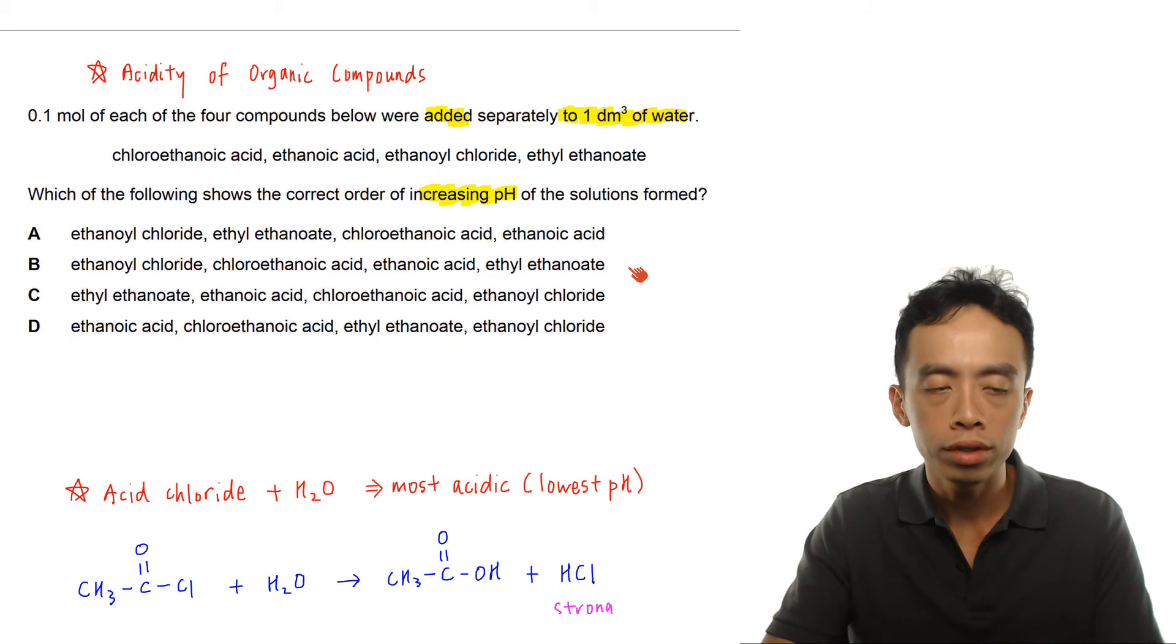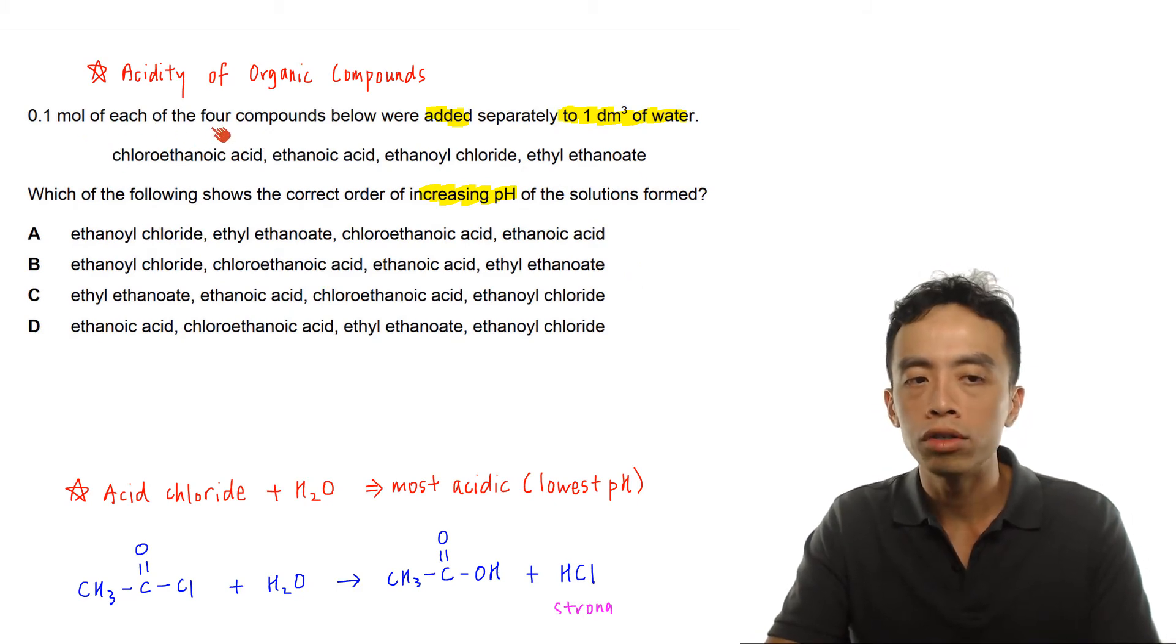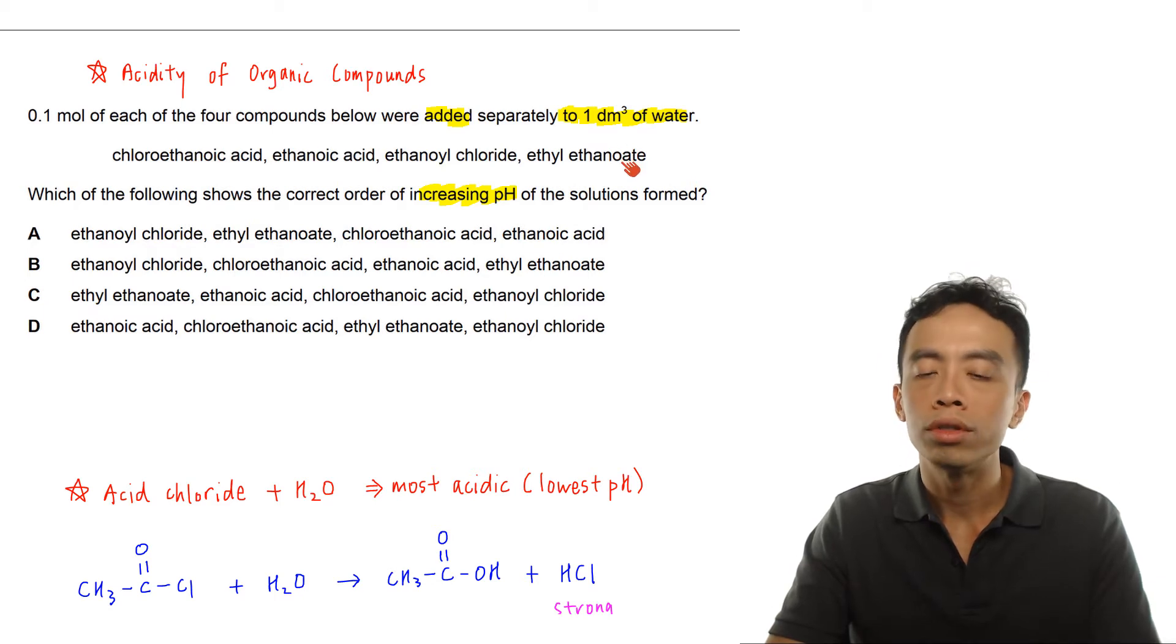Let's take a look at this question. I have 0.1 mol of each of the four compounds below were added separately to 1 dm³ of water: chloroethanoic acid, ethanoic acid, ethanoyl chloride which is an acid chloride, and ethyl ethanoate which is an ester.